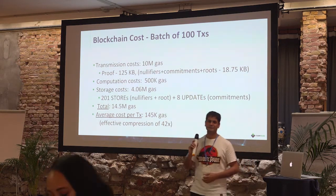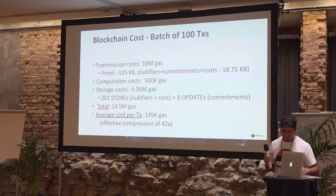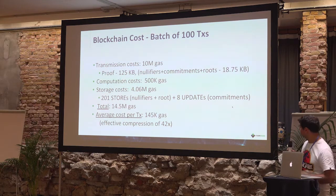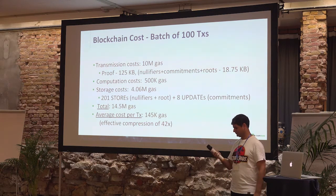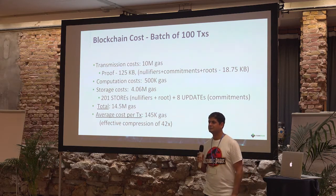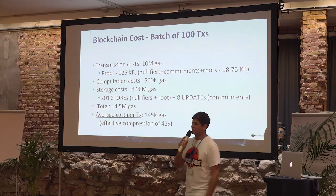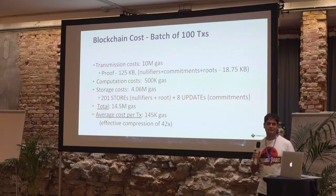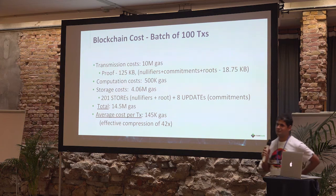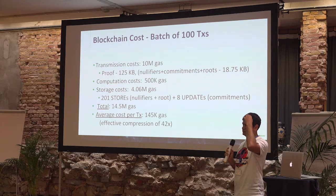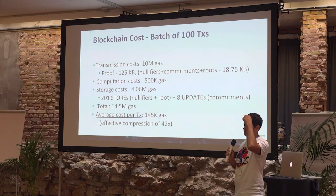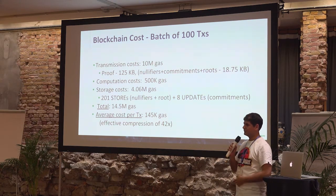An audience member asks: if I want to send a shielded transaction and use the prover service, I understand it can decrease the price, but it would likely increase the time I have to wait if we're only batching 100 transactions at a time, correct? Yes, it depends. If we have a small enough proof to put in one block, the latency will not be very high because the prover service can do part of the work in parallel.